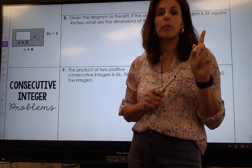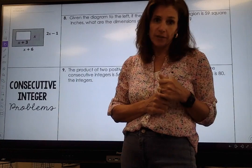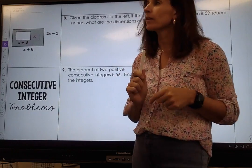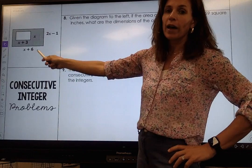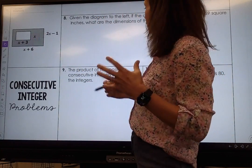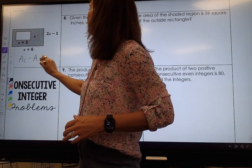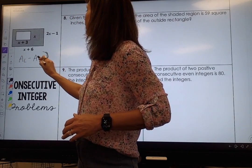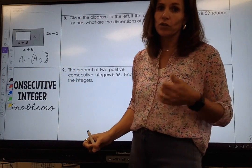I want to do one more area problem that we really focused on last year and then we're going to move on to consecutive integer quadratic problems. Over here, if I wanted to find the area of the shaded region, we took the area of the large minus the area of the small, and I made you put the area of the small in parentheses so that tells us we've got to use the distributive property.